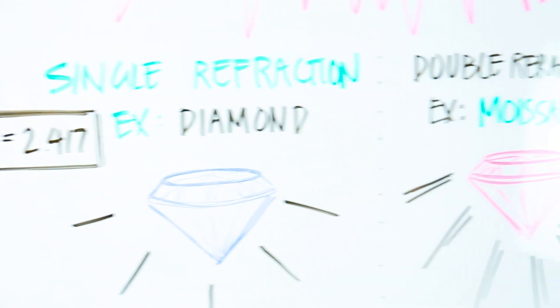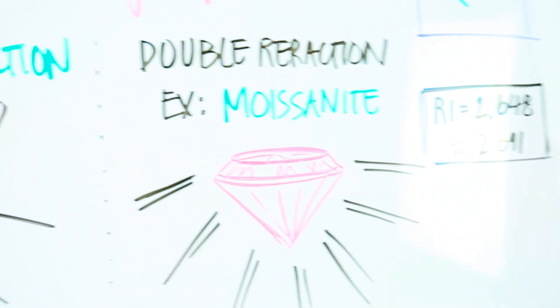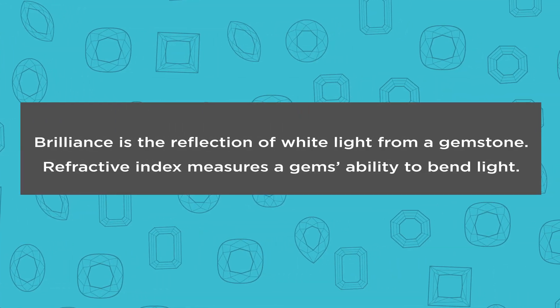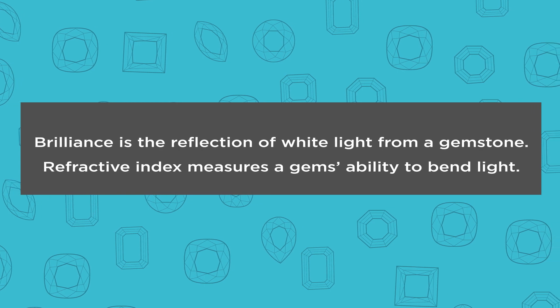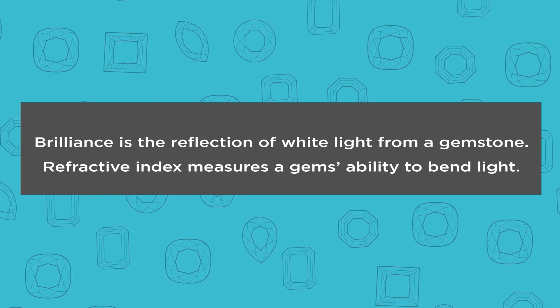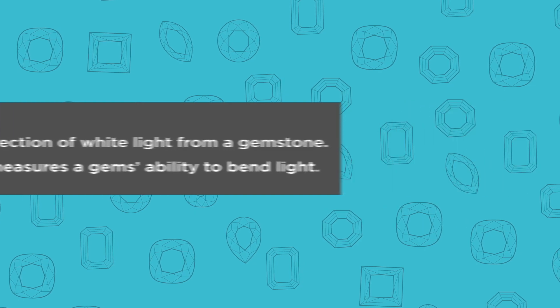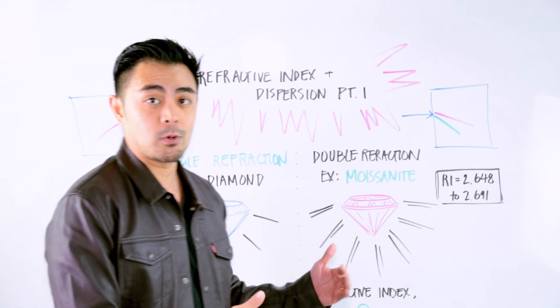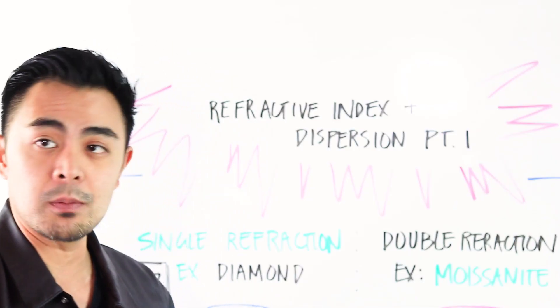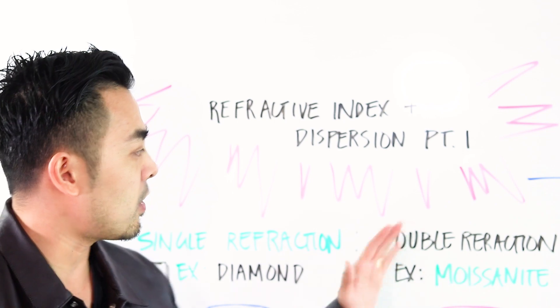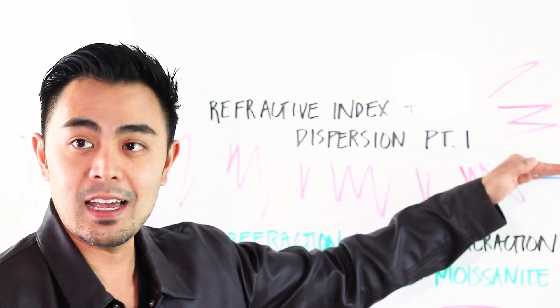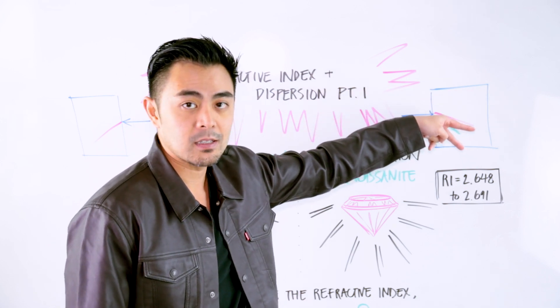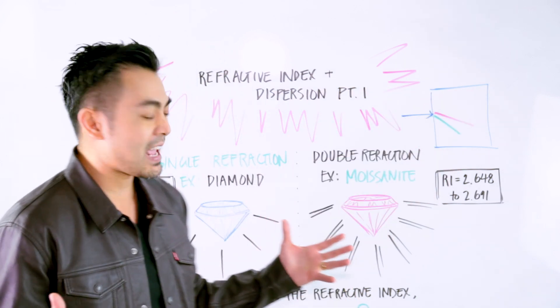There's single refraction as well as double refraction. So when it comes to gemstones, most of the times they will recognize what a diamond is. So diamonds will always be single refraction. So all that means is that when a light ray enters, it will bend in one ray as opposed to moissanite and most gemstones. Most gemstones, not just moissanite, but most gemstones are doubly refractive. So it's double refraction. All that basically means that when light enters into this gemstone, it actually breaks into two rays in different velocities.